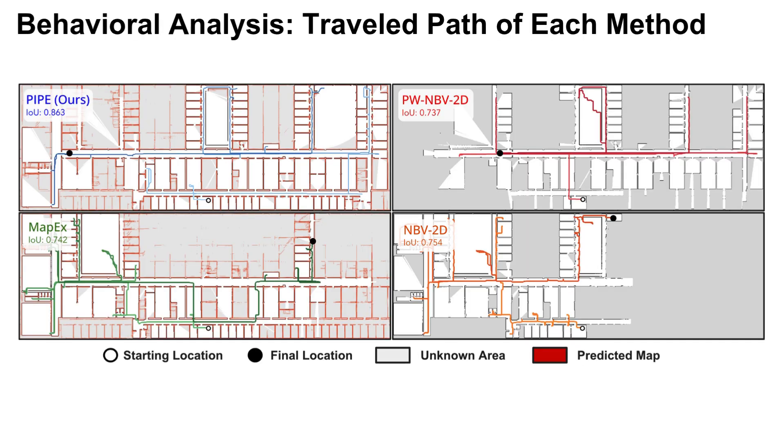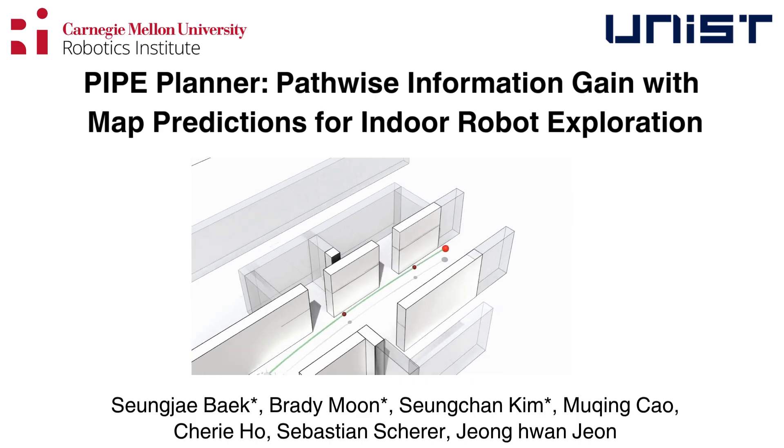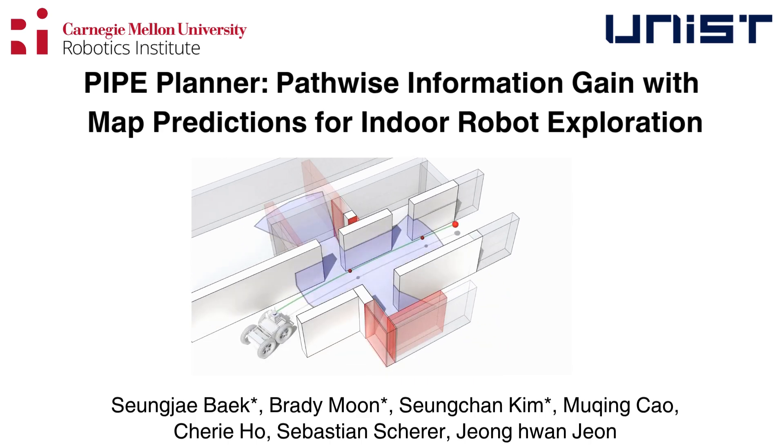Now we move on to the qualitative comparison on traveled paths. While other methods focus on one half of the map or focus on corridor skipping rooms, PIPE balances exploration between rooms and corridors and covers a larger space by leveraging predictive uncertainties and pathwise coverage, achieving the best performance. Thank you.